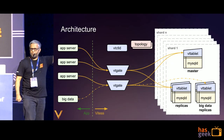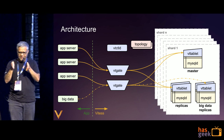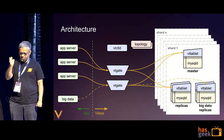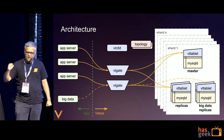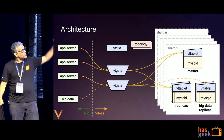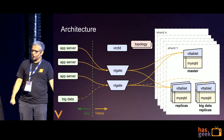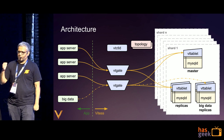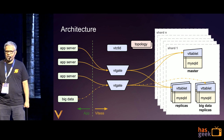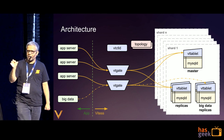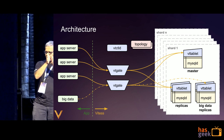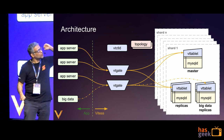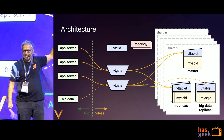Let's say this is a keyspace called UserDB sharded using user ID. A query comes in: SELECT * FROM UserDB WHERE user_id = 2514. VtGate parses that query, looks at the WHERE clause, sees that it has user_id equal to some number, realizes this keyspace is sharded using user_id, figures out which shard the query should go to, applies the sharding function to the value, and determines it needs to go to shard number 3. It sends the query there.